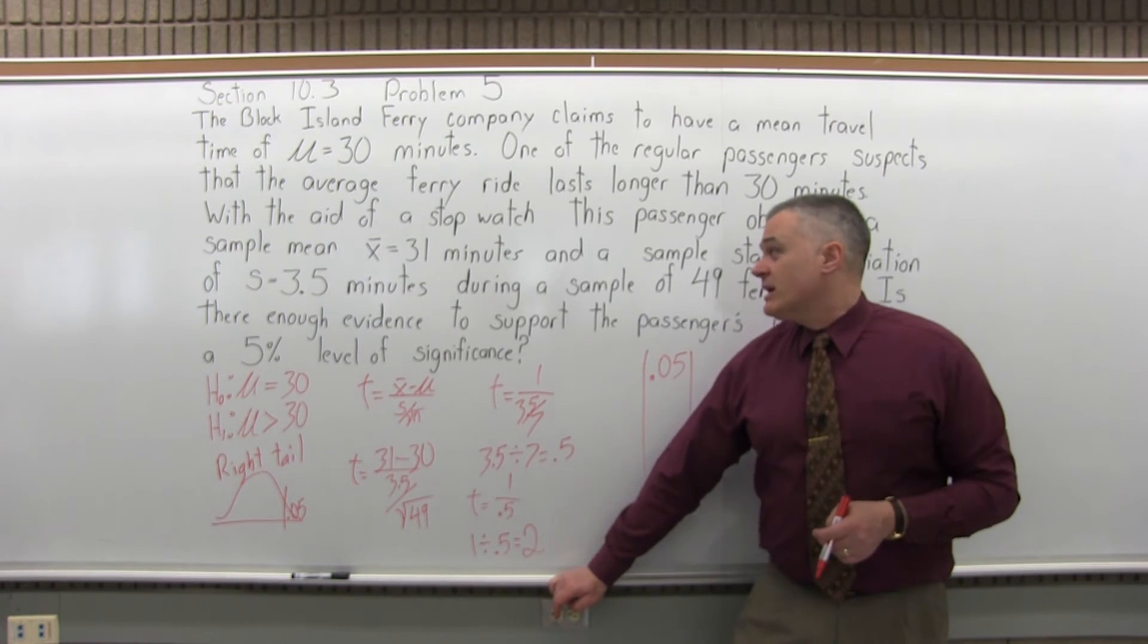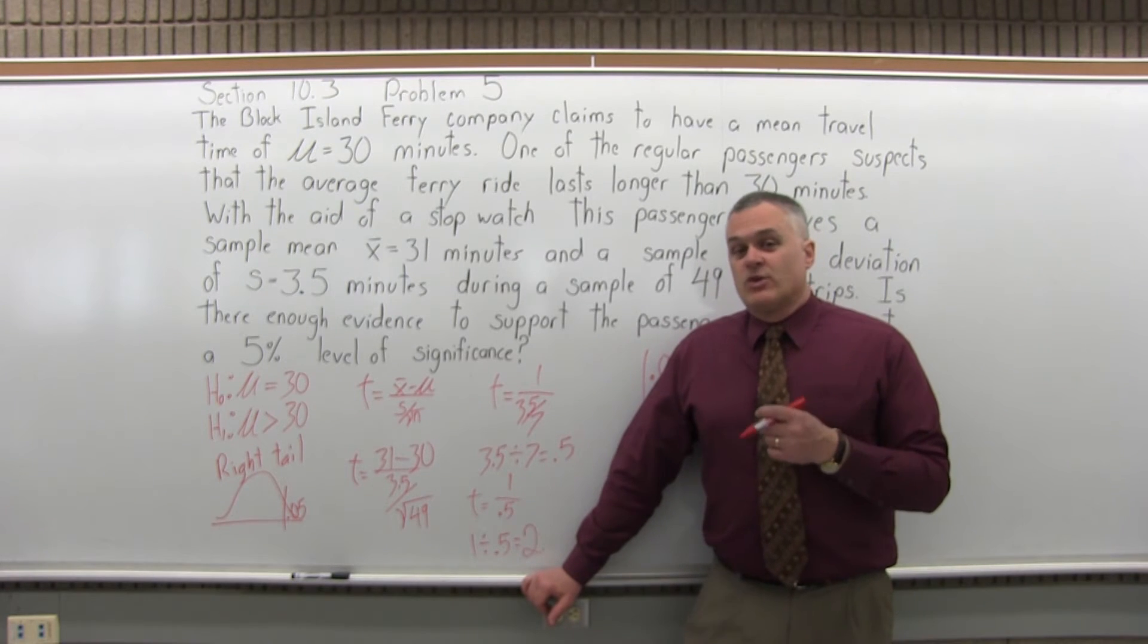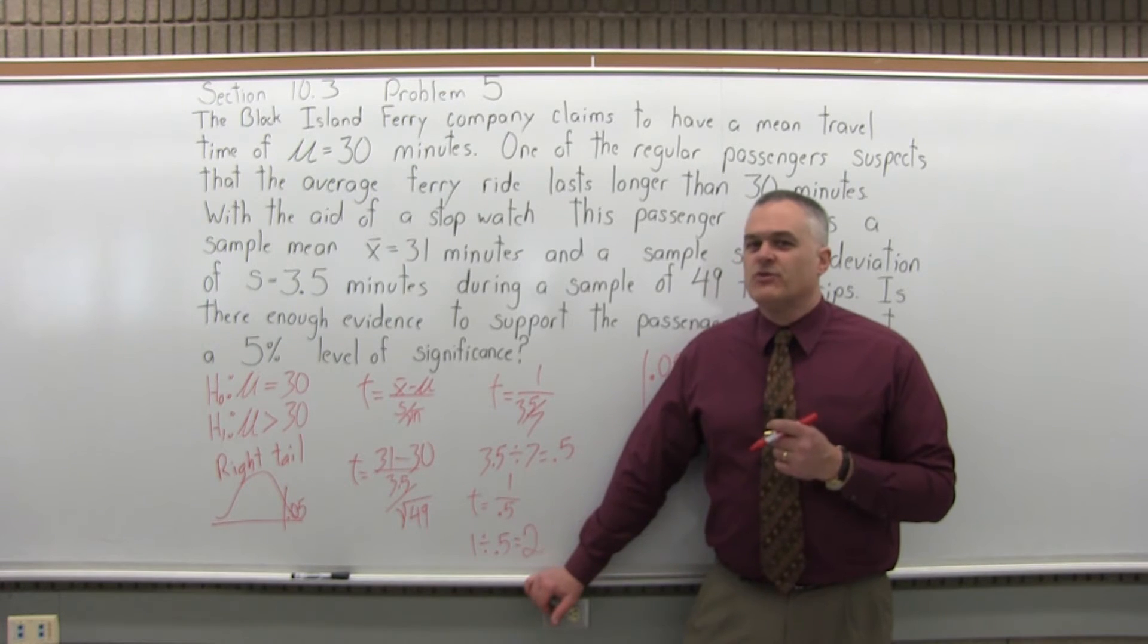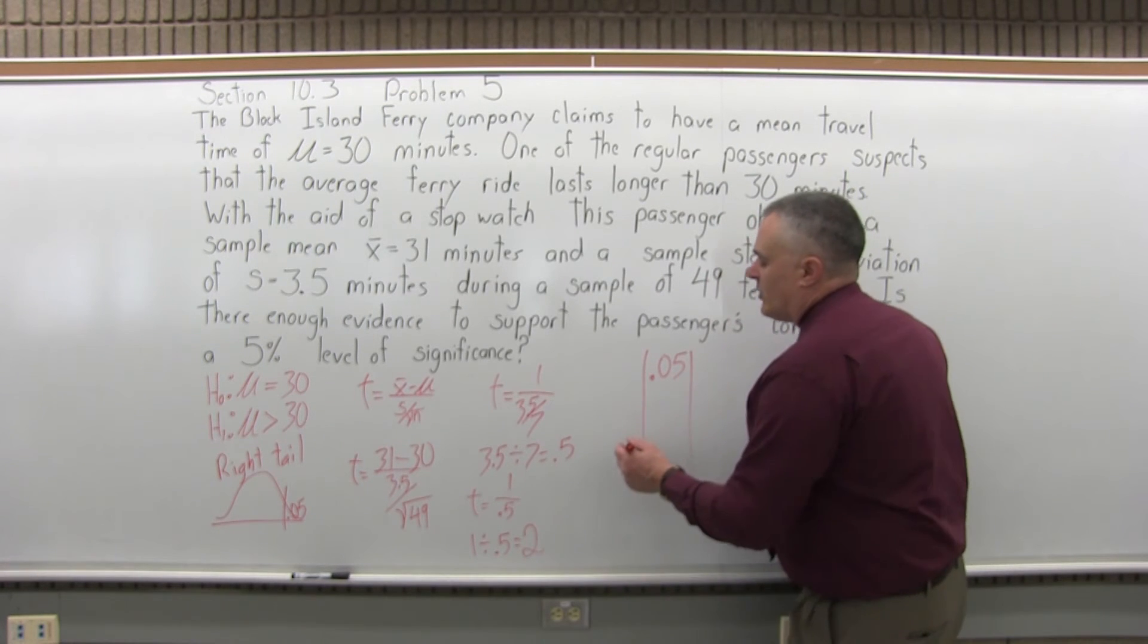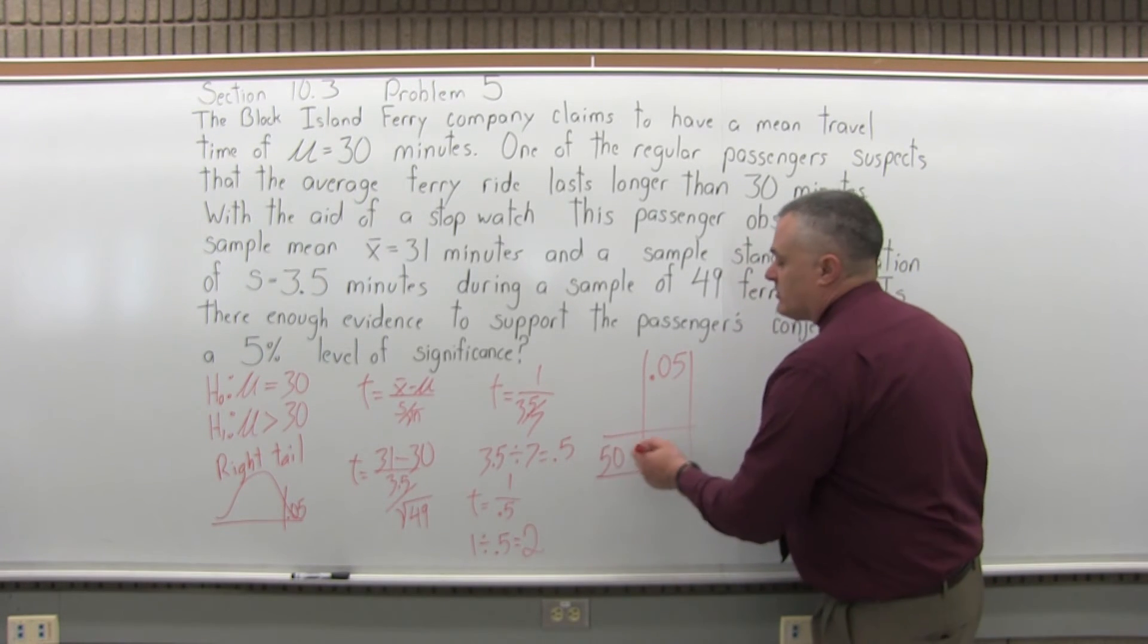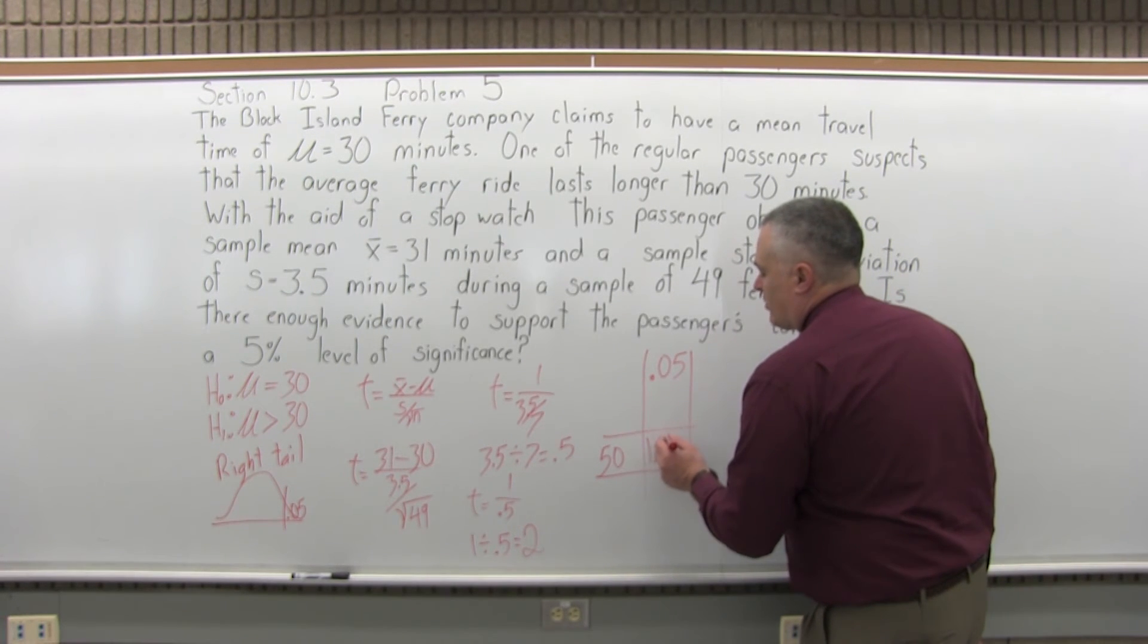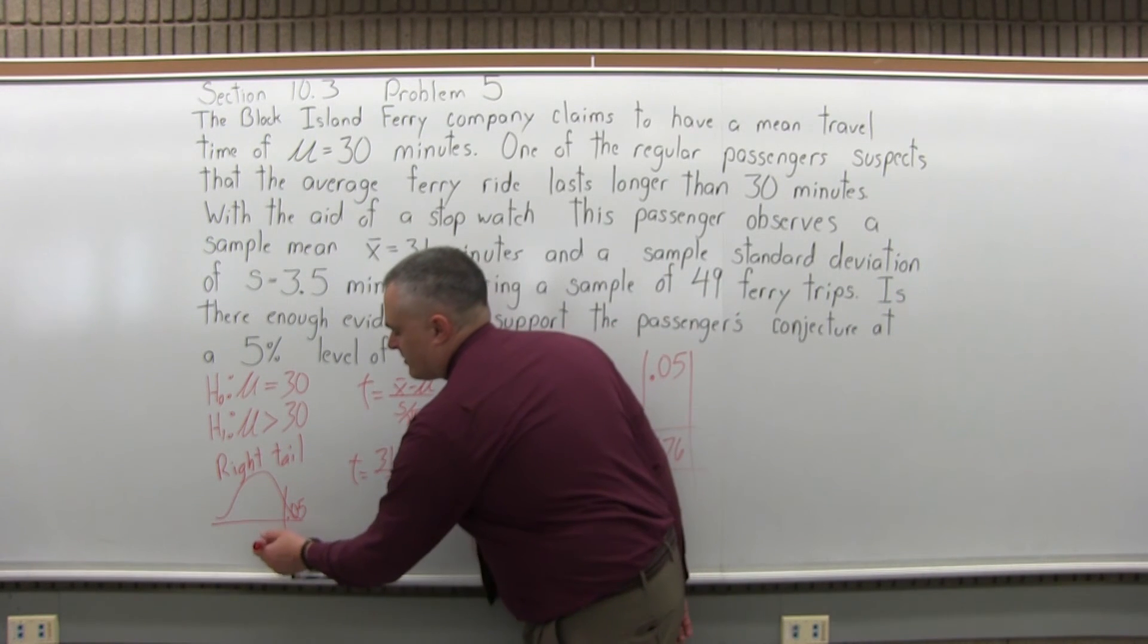And sometimes as the sample sizes get bigger, that will happen. So when it does happen, what you want to do is find where the row would be if it was in the chart and go to the next biggest one that really is in there. So there is no 48, but there is a 50. That would be the next biggest one if they did list all the rows. So we can't quite find 48—50 is the closest, next biggest one. So we're going to go to the row with 50. Now, where the row with 50 degrees of freedom intersects the column with 0.05 level of significance, the number for that is 1.676. That's my critical value, 1.676.